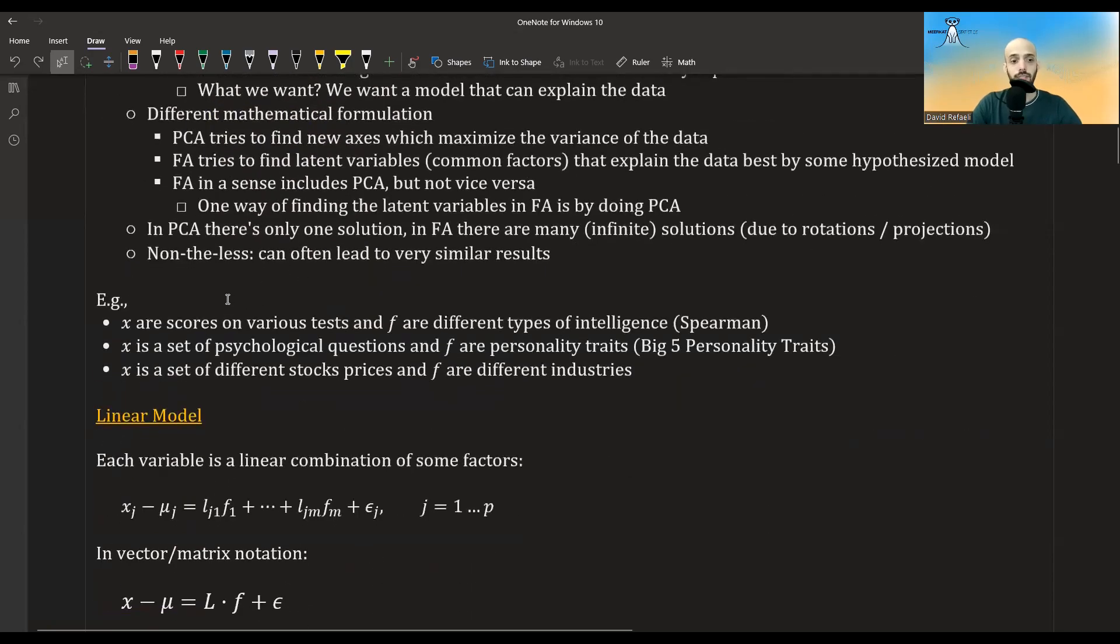So here are some examples of doing factor analysis. X could be, for example, scores on various tests, and F can be different types of intelligence. And if I'm not mistaken, this was the original application used by Spearman, which was maybe the first person who developed factor analysis. There were other people who came after him who developed it more. Well, I think he was the first one.